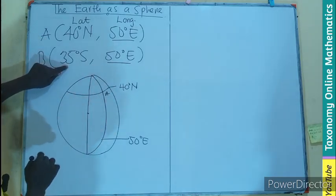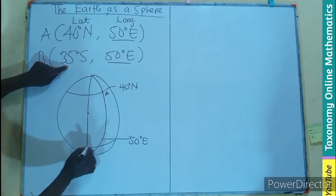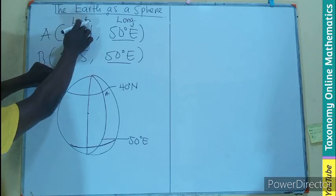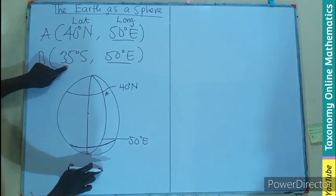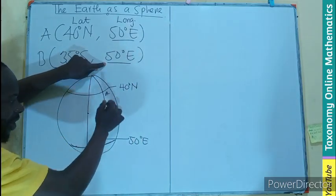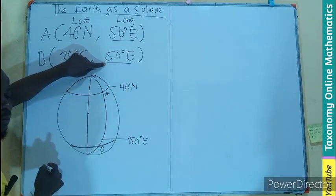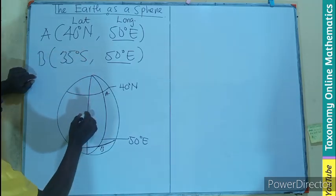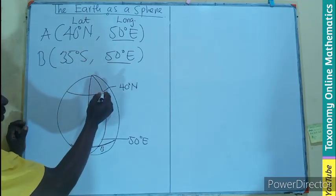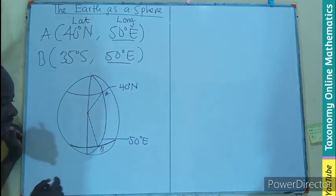Then 35 degrees south — south meaning the line is going to be passing here — this is latitude 35 degrees south. Then longitude 50 degrees east, on the same longitude, so the intersection gives us point B. The center will be here, and to form the circle we have this line and this line.